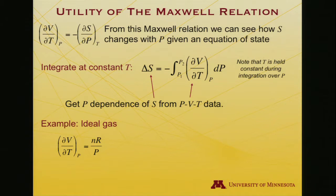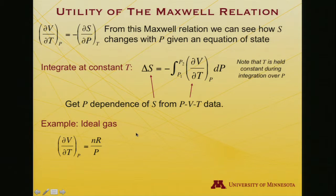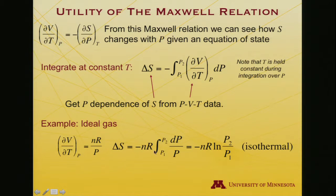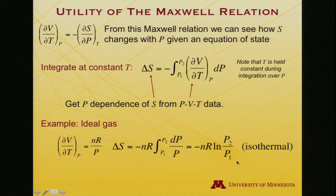It is always convenient to work with an ideal gas first. For an ideal gas, volume equals nRT over P, so taking the derivative with respect to temperature trivially gives nR over P. That means my integral has the constants taken out front — it becomes dP over P — and I end up with minus nR times the logarithm of the final pressure divided by the initial pressure, P2 over P1, at constant temperature.